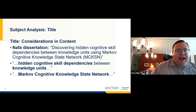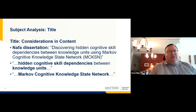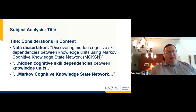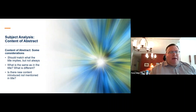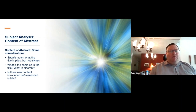Considering the content of the title: in our dissertation by Fatima Anafa, you see the title, and I focus on the principal parts — hidden cognitive skill dependency, knowledge units, Markov Cognitive Knowledge State Network. Then the content of the abstract — that should match with what the title implies, but that's not always the case. So you have to determine what's the same, what's different, and whether there's new content introduced that's not mentioned in the title.